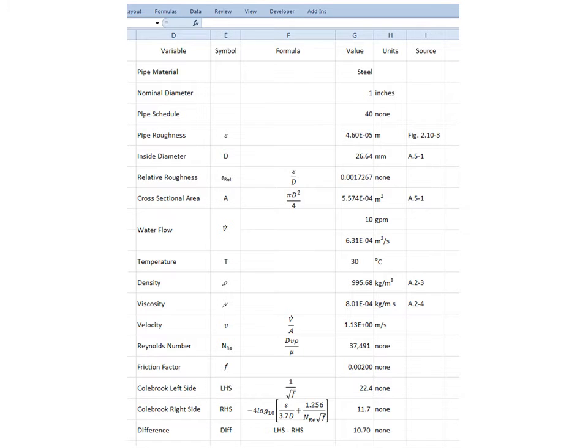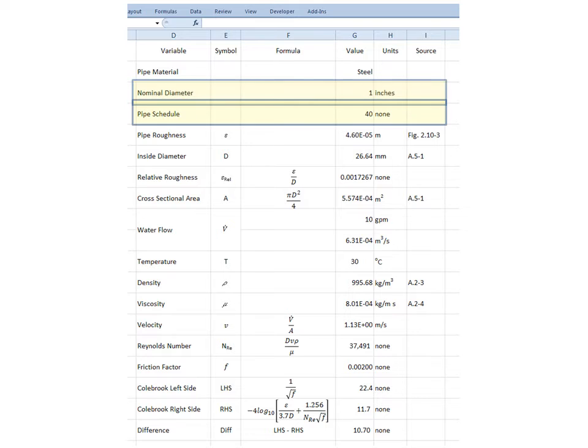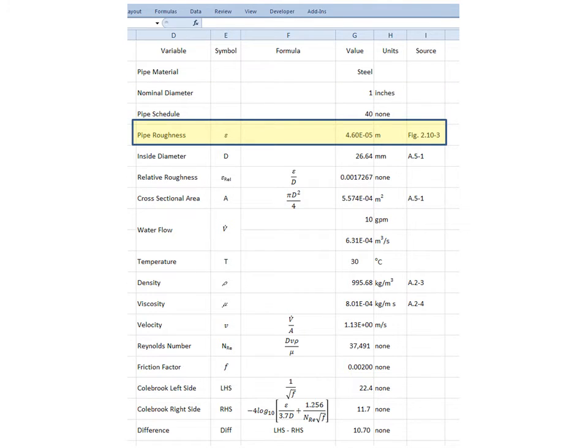To understand everything, let's look at a specific example. Let's say we had a cylindrical pipe made out of steel, with a nominal diameter of 1 inch, and the pipe schedule is 40. From figure 2.10-3, the pipe roughness is given to us as 4.6 times 10 to the minus 5 meters.